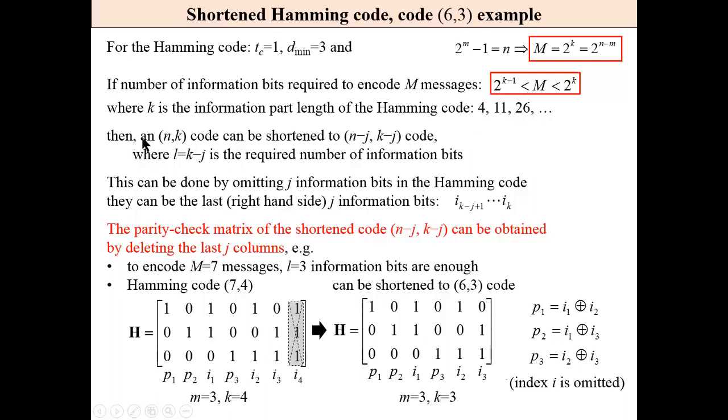then an (n,k) code can be shortened. This can be done by omitting some number of information bits in the regular Hamming code. They can be the last right hand side information bits.